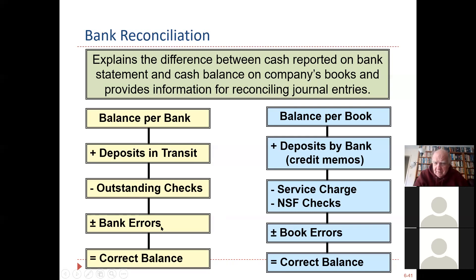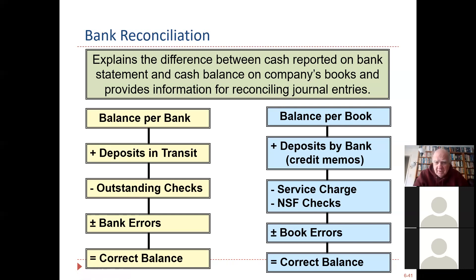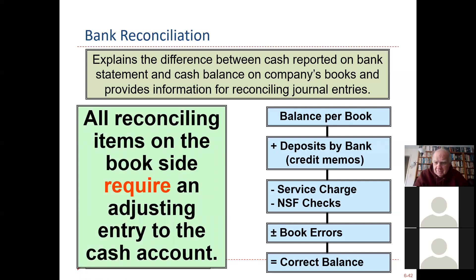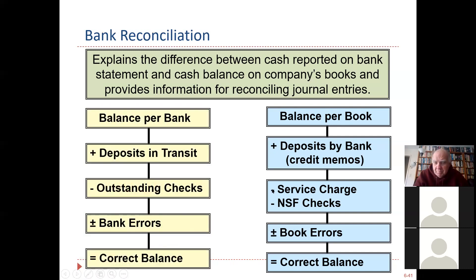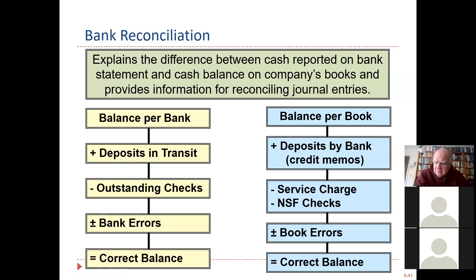On the ledger side — the balance per the books — we're now going to look at the bank statement and find things the bank knows that we didn't know. For example, somebody sent a payment of $1,000 directly to the bank. The bank might have service charges. We might make mistakes — we wrote a check for $279 but entered $297 into our system. Those kinds of things are reconciling items on the book side.